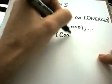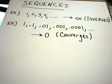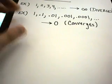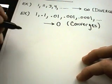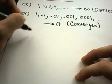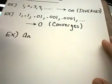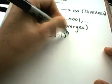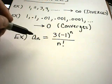The second sequence is getting smaller and smaller, approaching zero — so we say it converges. Sequences and series are related topics, so be aware of that. Typically, you'll be given a formula; for example, a sub n equals three times negative one to the n power over n factorial.